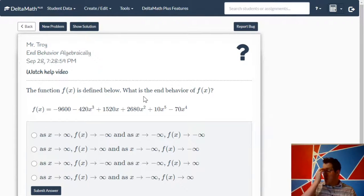So the ends are going to point in opposite directions. And the lead coefficient is positive 10. So as we go to the right, the graph is going to be going upwards.